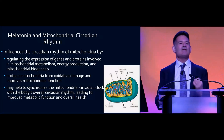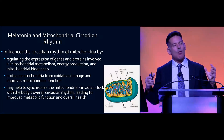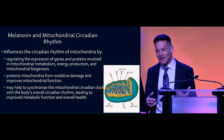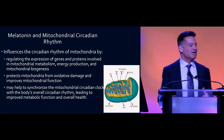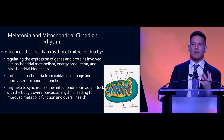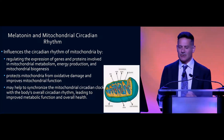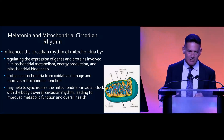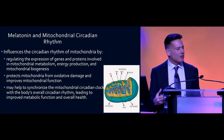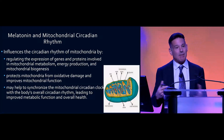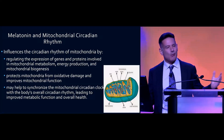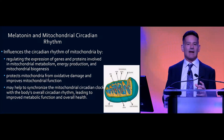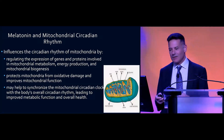Melatonin is also important for the mitochondrial circadian rhythm. We all know about the overall circadian rhythm, but there is also a mitochondrial circadian rhythm, and we want that to be synchronized with the overall body clock. Melatonin regulates the expression of the 37 genes in the mitochondria — which are very important for health — as well as protein production, energy production, mitochondrial biogenesis, and protection from oxidative damage.